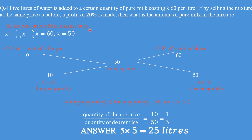Just as in the previous question, you cannot use the selling price directly in the table — you must calculate the cost price. Let the cost price of the mixture be x. Given 20% profit, we write x plus 20 upon 100 into x equals 60, so 6x upon 5 equals 60, giving x equals 50. This cost price of 50 is the mean price that you put into the table.